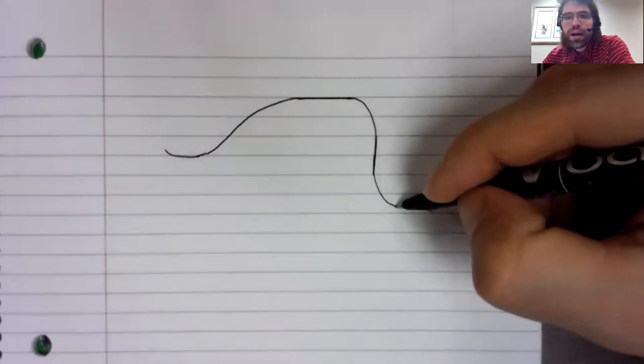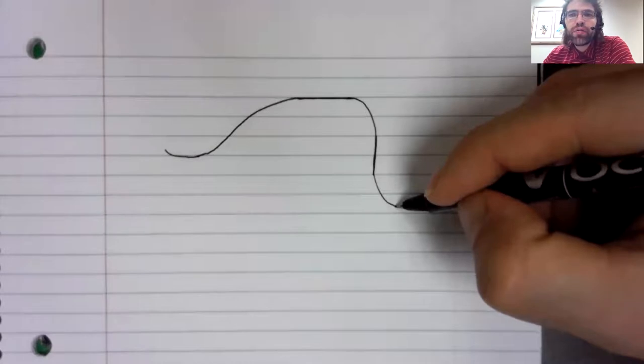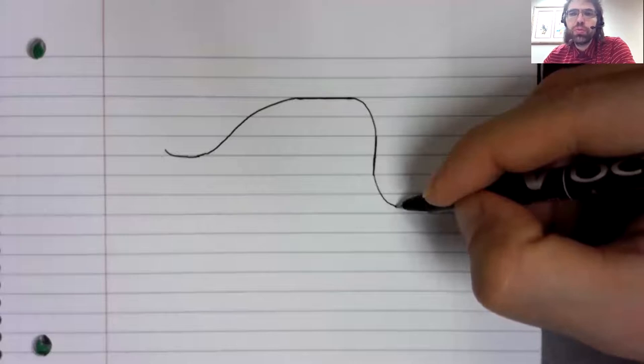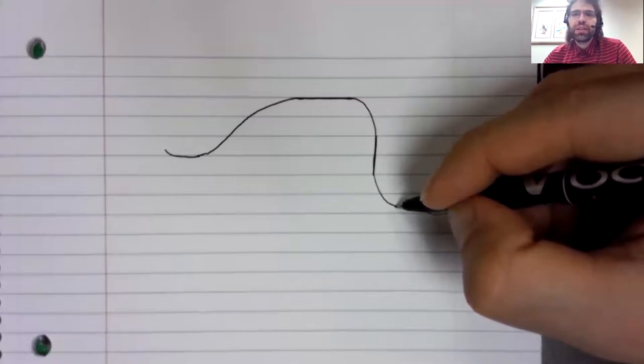If dy/dt and dx/dt are ever both zero, the object stops moving. It's not moving horizontally. It's not moving vertically. It just sits there forever. And that breaks the formula if it happens.